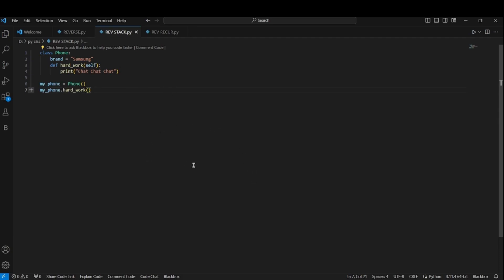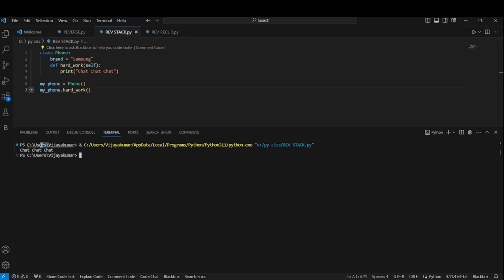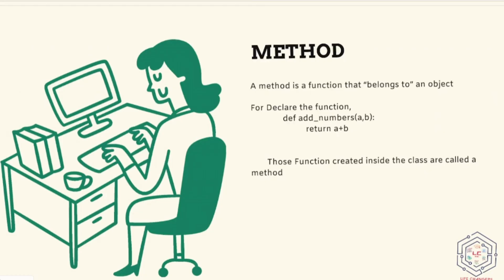To call the method from a class, you will just create an object. Write the object name and then a dot and then call the method as you are calling a function. Also, note that you won't pass the first parameter. Python will do it for you. Don't get confused. Keep trying. This will make sense later. I will explain more. While we are running the code, we will get the output of chat chat chat. We will call it.